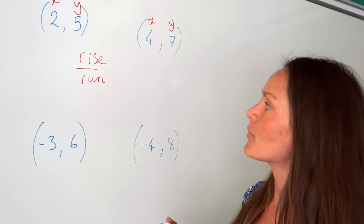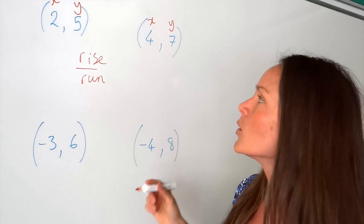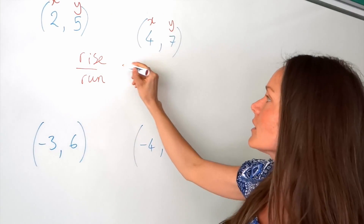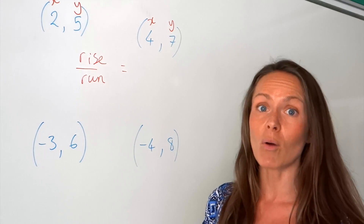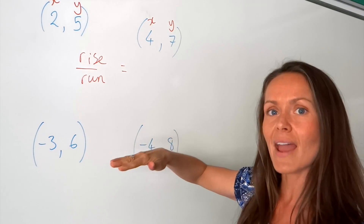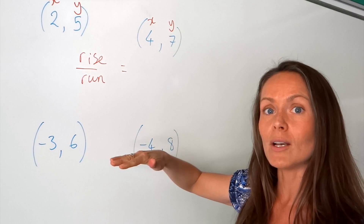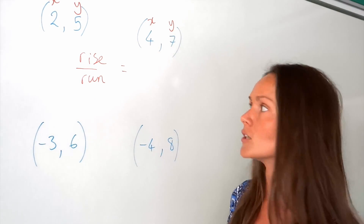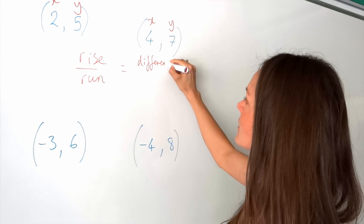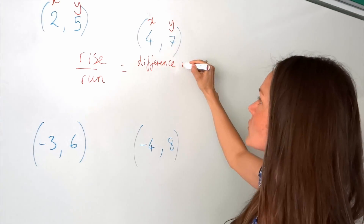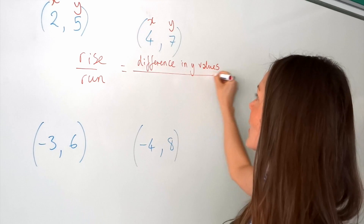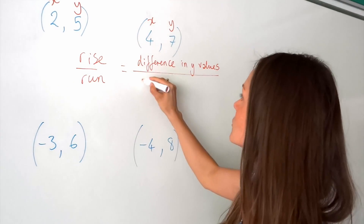When we use this method, rise over run — rise is going up or down, so we're looking at the difference between the y values. The run is horizontal, like the x axis, so we're looking at the difference in the x values. So we're actually just subtracting the two y values, then dividing by the difference in the x values.